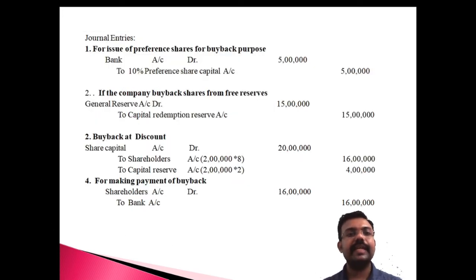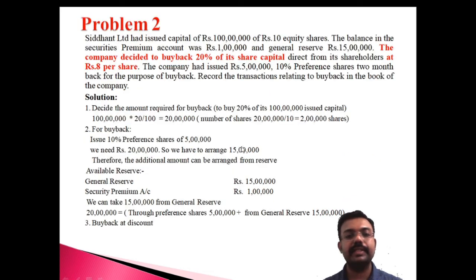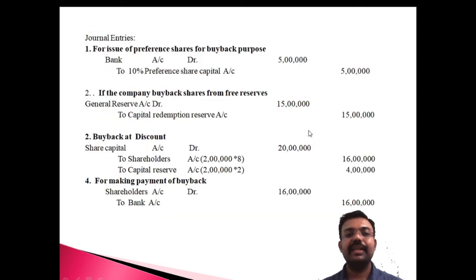Journal entries: First entry — company issues preference shares for purpose of buyback: bank account to 10% preference share capital — amount rupees 5 lakh. Second entry — company utilizes general reserve: general reserve account to capital redemption reserve — amount 15 lakh.